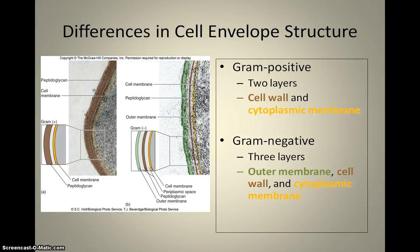A gram-stain is something that we'll perform in the lab, and it's named after the person who invented it. We can actually stain bacteria different colors based on what kind of cell envelope they have.